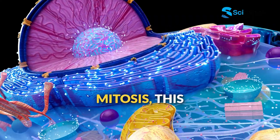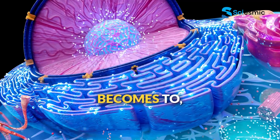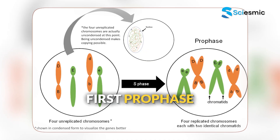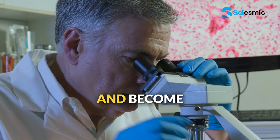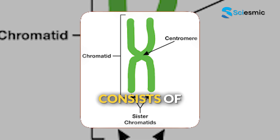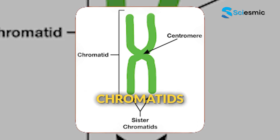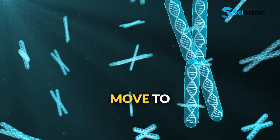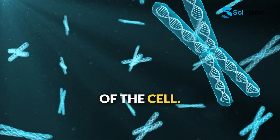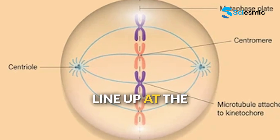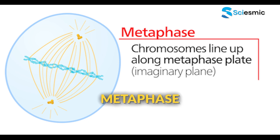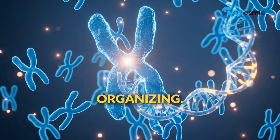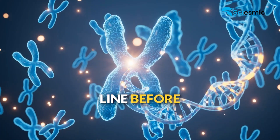Now for the main event: mitosis. This is where one cell actually becomes two. First, prophase — the copied chromosomes condense and become visible under a microscope. Each chromosome consists of two identical sister chromatids joined at the centromere. The nuclear envelope starts breaking down and structures called centrioles move to opposite poles of the cell. Next, metaphase — all chromosomes line up at the cell's equator, called the metaphase plate. Spindle fibers from the centrioles attach to each chromosome, organizing them into a perfect line before the big split.